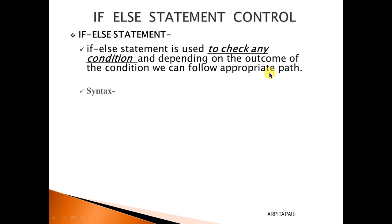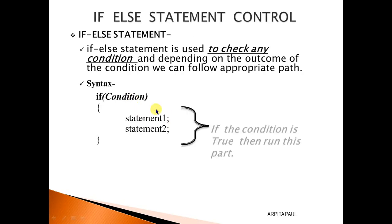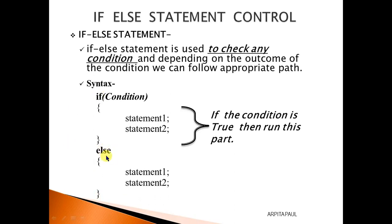So let's see the syntax of the if statement — how we will write it. We will write 'if', then within brackets we will provide the condition. Then within curly braces we will provide our statement part — whatever we want to perform as per the condition. If the condition is true, then only it will execute this statement. If the condition is false, then this if part will not be executed; it will go to the else statement and execute the statement part of the else.